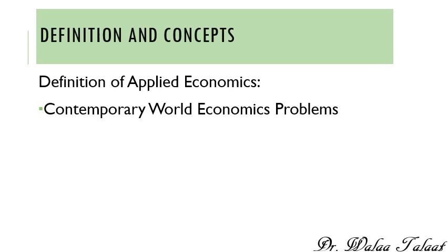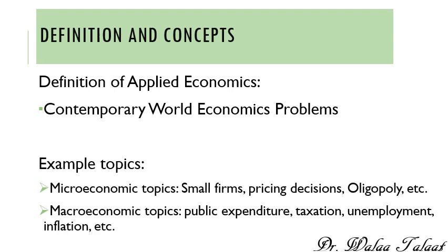Examples of branches include microeconomics topics such as small firms, pricing decisions, oligopoly, monopoly, competition policies, multinational firms, labour markets, housing, education, and environmental economics. In macroeconomics we have topics like public expenditure, taxation, unemployment, inflation, and many others. The core is how we use theories from macroeconomics and link them to these different real-world topics. This bridge is what we refer to as Applied Economics.